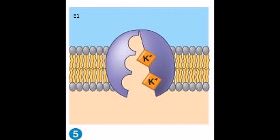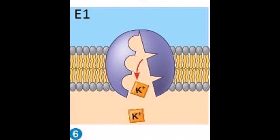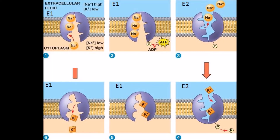The loss of the phosphate prompts the pump to return to its earlier conformation and open to the inside of the cell. The conformational change results in the pump losing its affinity for the potassium ions, and they are free to exit the pump and enter the cell. The pump is now in its original conformation and ready to repeat the procedure. Because the protein pump pumps three sodium ions out for every two potassium ions in, it is capable of creating a negative net charge inside the cell, returning the cell to its resting state.